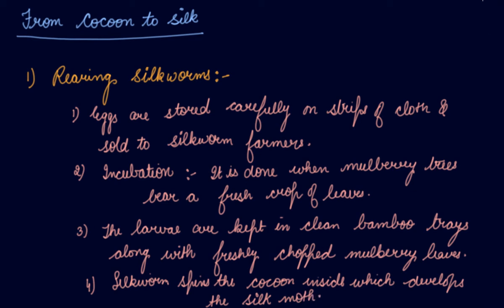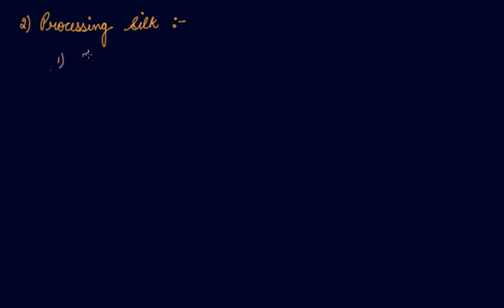The next step is the processing of silk. We have obtained silk fiber on the cocoon. Now we need to take out the silk fiber from the cocoon — that is the processing of silk. From the cocoon you obtain the silk fiber. The first step is that the cocoons are kept under the sun or boiled.